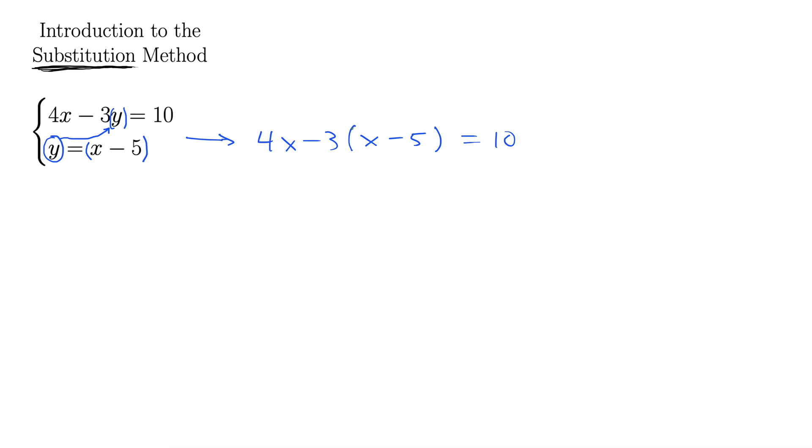This x minus 5 was originally y, but we decided to substitute in for that value. And look what we have now—we have a single equation with just x's in it, and we can solve that. Let's do it. 4x minus—I'm going to take this minus 3 and distribute it through. So this becomes 4x minus 3x plus 15 equals 10.